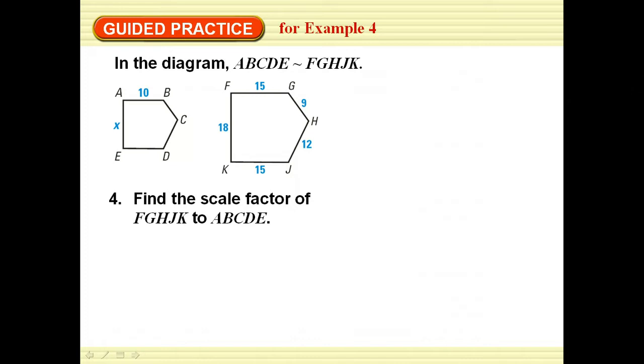In this diagram, they want you to find the scale factor. This time they are asking for the big to the little. So I find my matching things and I set it up and reduce it. So it comes out to be 3 over 2. We are going to have to use AB and FG. So that would be 15 over 10, which gives me 3 over 2.